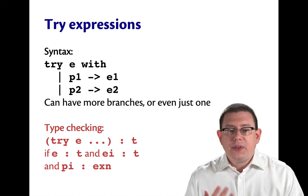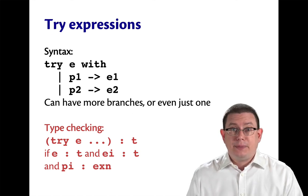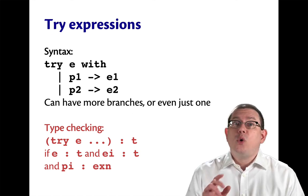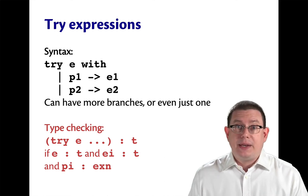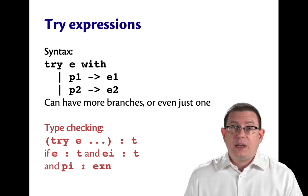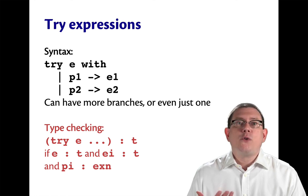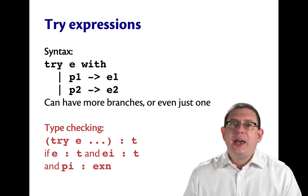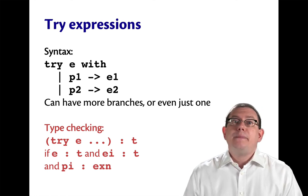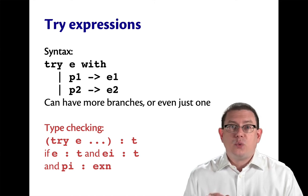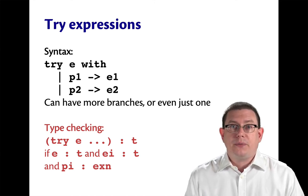And if all of the e sub i's have that same type t, why? Because one of them might end up getting to be the value that gets returned in the event of an exception. And of course, all of the patterns themselves have to type exn because we're pattern matching against whatever exception might have gotten raised.